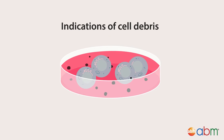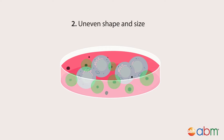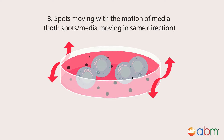Here are some indications that the black spots you're looking at are probably cell debris: if there is no odd media color change or the particles don't increase in number, the particles are uneven in shape and size, and there is no directional movement at high magnification. If the dark spots move with the motion of the media, it is most likely cell debris.